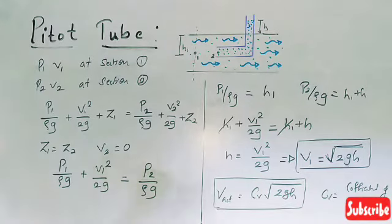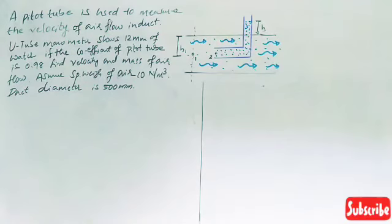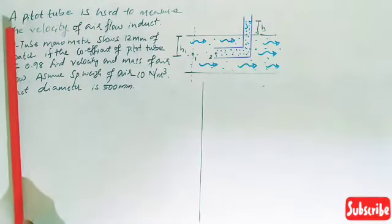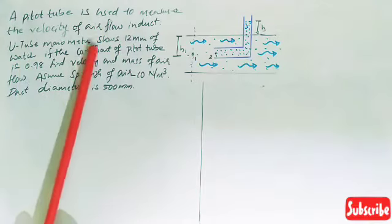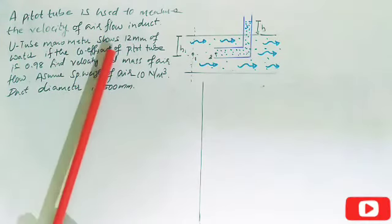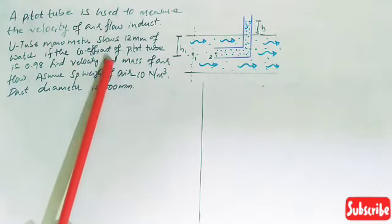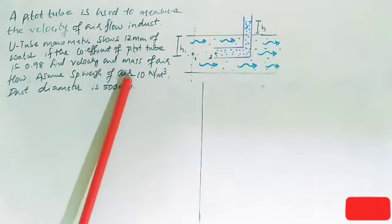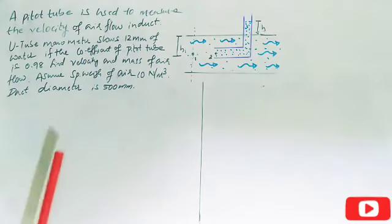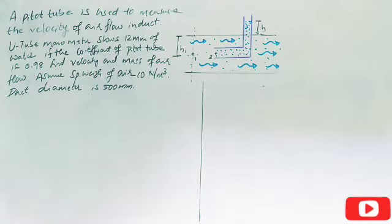Now let us solve a numerical which appeared in the university examination, worth 10 marks. The question is: A pitot tube is used to measure the velocity of air flow in a duct. A U-tube manometer shows 12 mm of water. If the coefficient of the pitot tube is 0.98, find the velocity and mass flow rate of air. Assume the specific weight of air as 10 N/m³ and duct diameter as 500 mm.